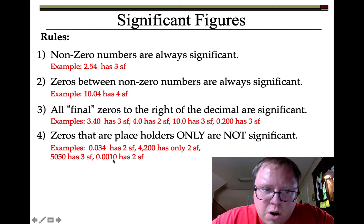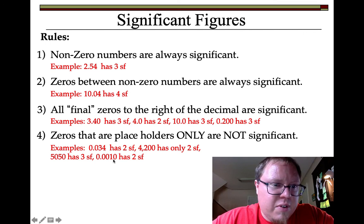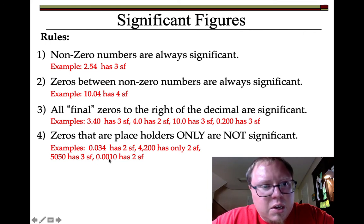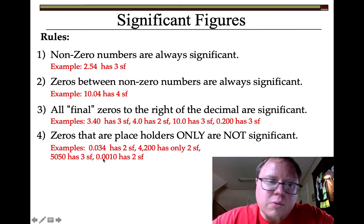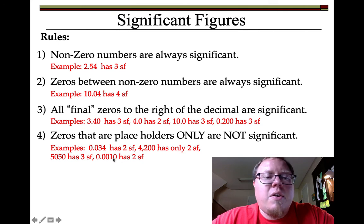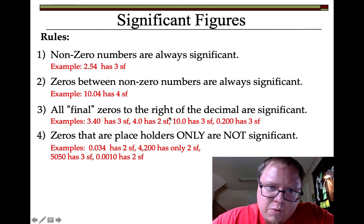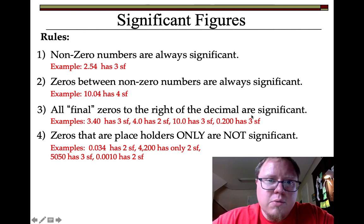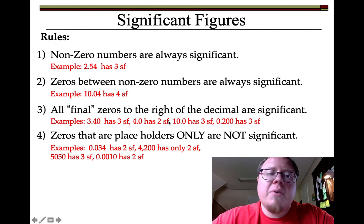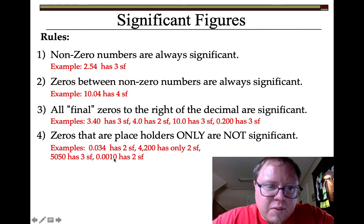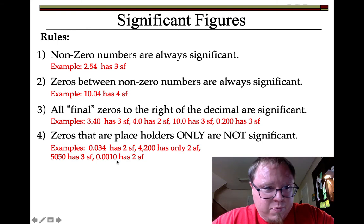0.0010 has two significant figures. These numbers in front just tell you it's really, really small. Then you have the 1 — that's significant. And then you have a 0 on the end, which follows rule three: it's to the right of the decimal telling you it's there just to show you have that place value. So that is two significant figures — the 1 and the 0.